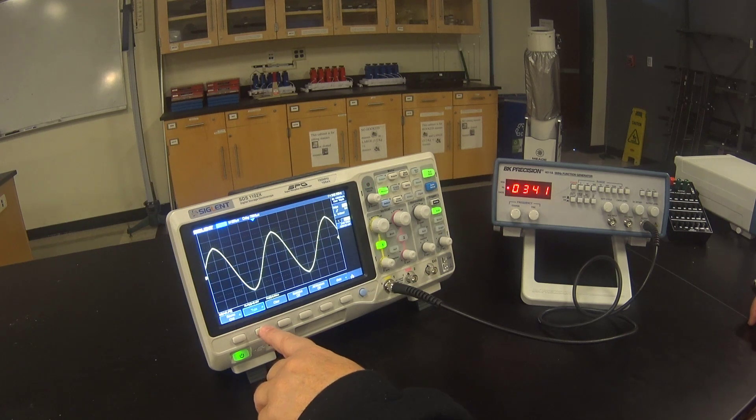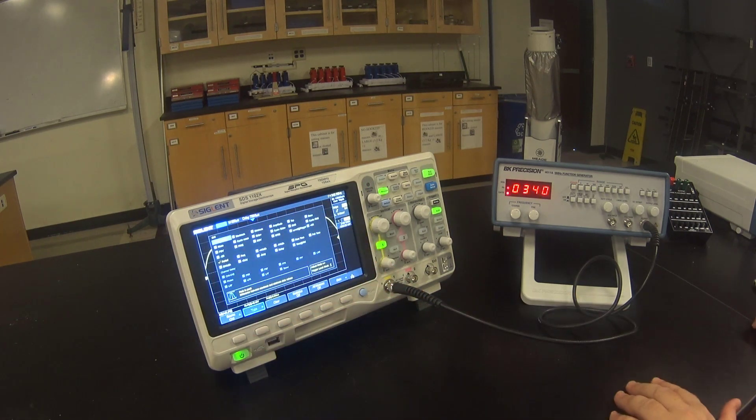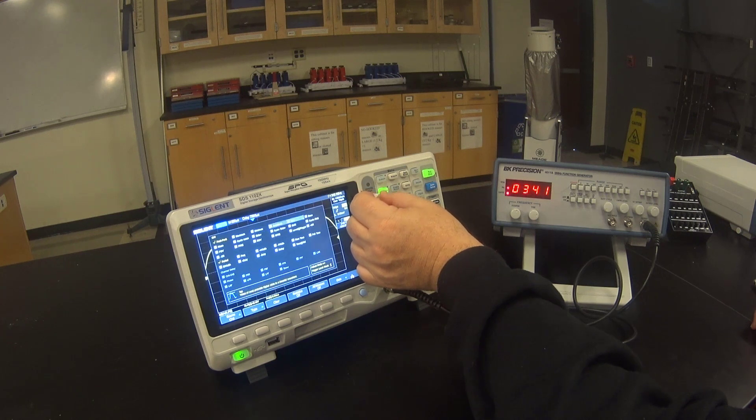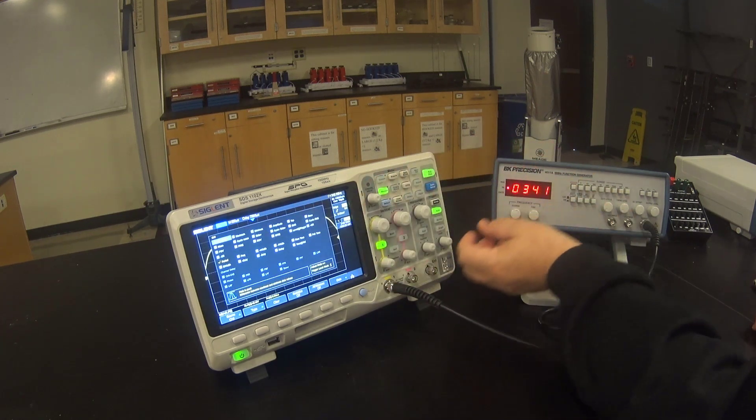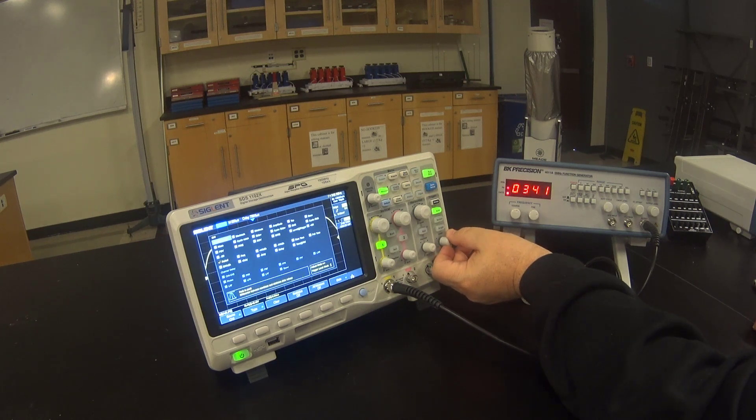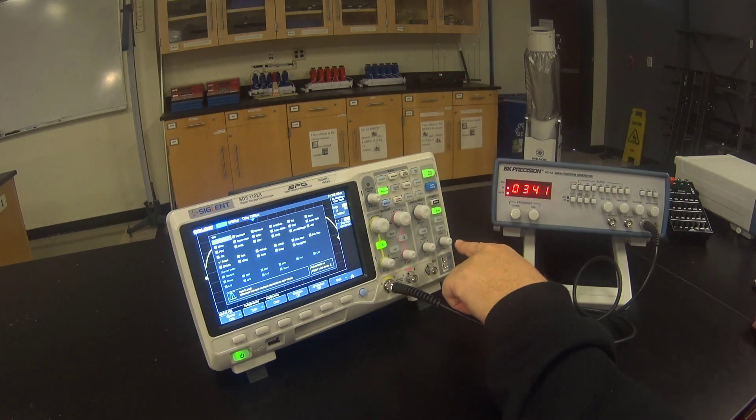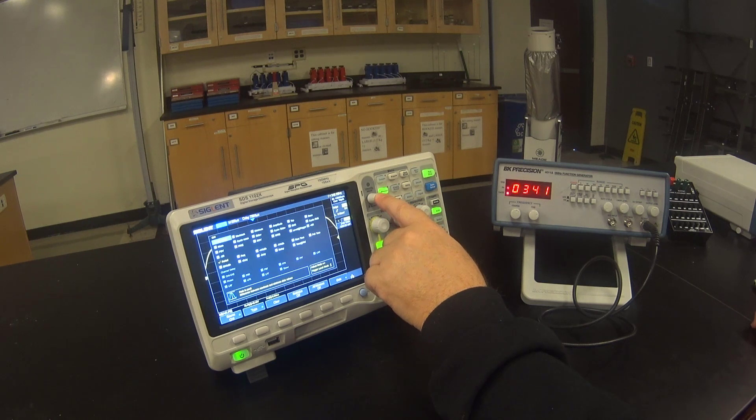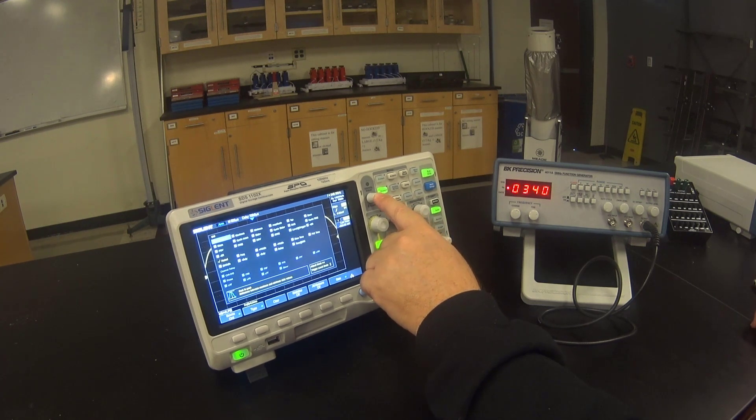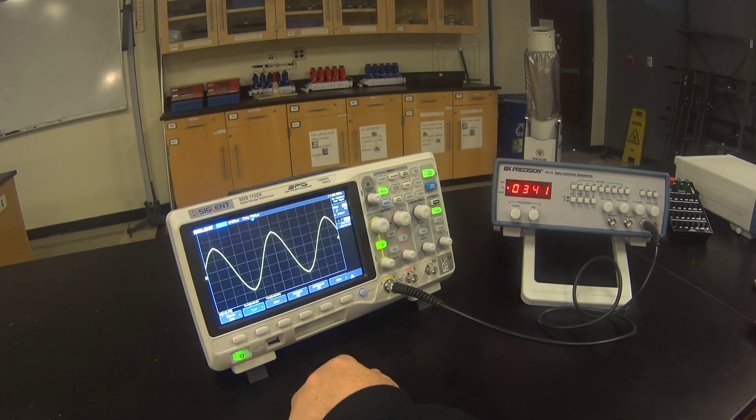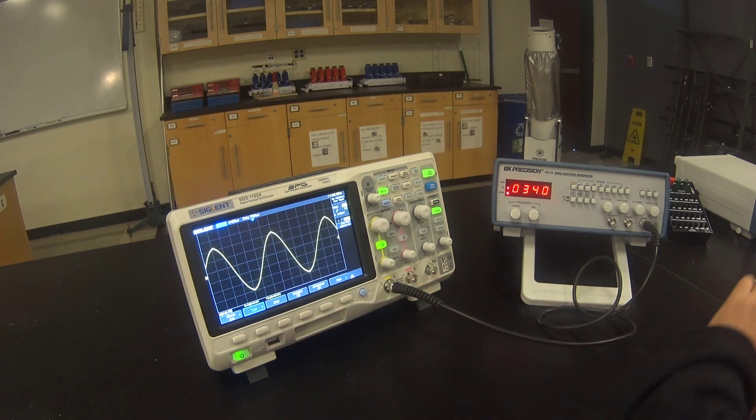If we push the type button, then we see an array of choices. To scroll through the choices, we use the intensity knob to select the column and the trigger knob to select the row. Once we have made our choice, we push on either of the two knobs we were using to toggle on or off the measurement. Push the type button again to remove the menu. The measurements that you've selected can be read here near the bottom of the screen.